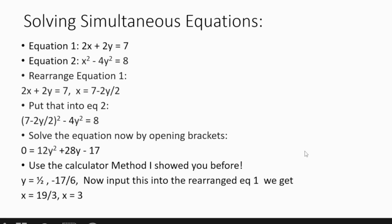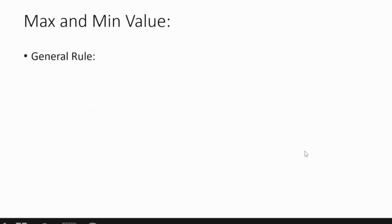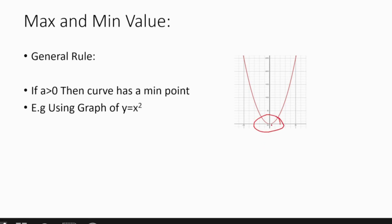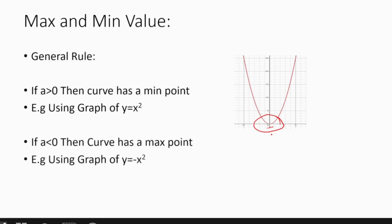Now let's move on to finding the maximum and minimum value of a function. General rule: if a, the coefficient of x², is greater than 0, the curve has a minimum point — as seen in the graph of y = x², where the minimum is at (0, 0). If the coefficient of x² is less than 0, the curve has a maximum point, as seen in y = -x². Remember these two general rules.